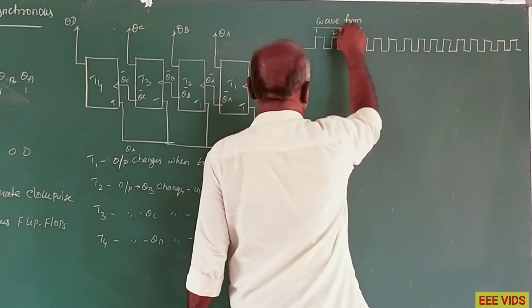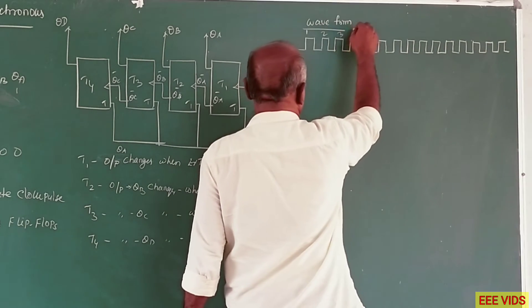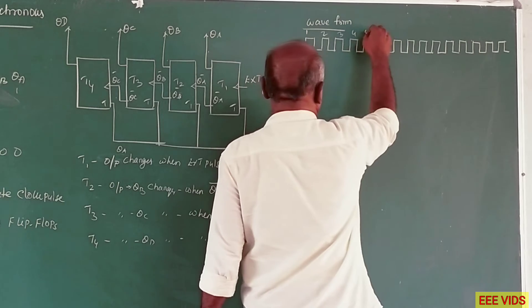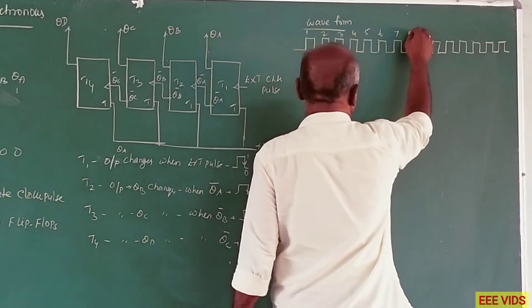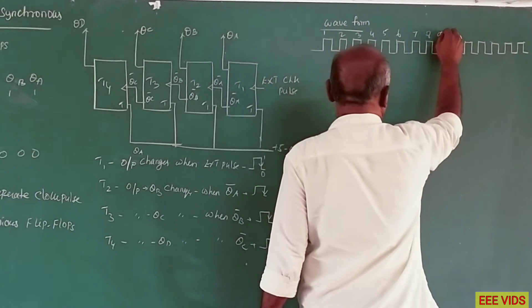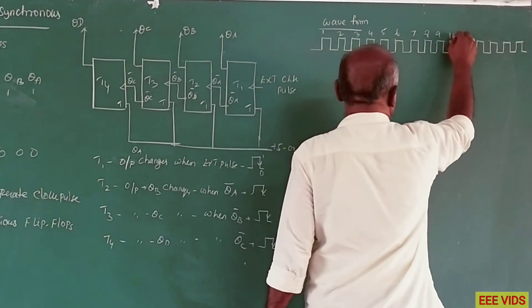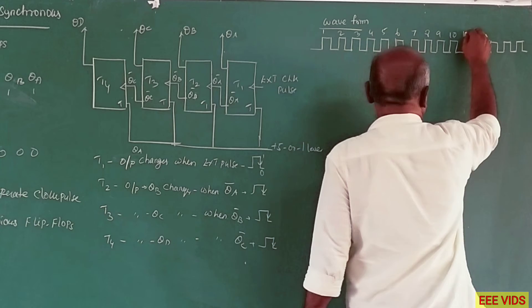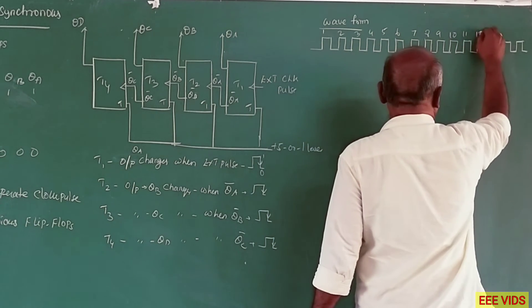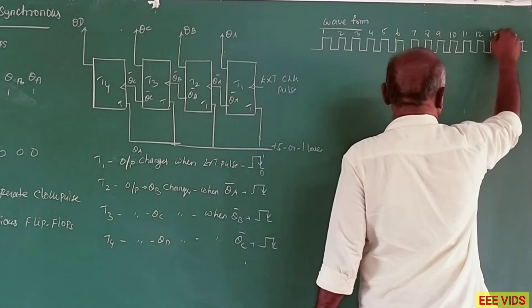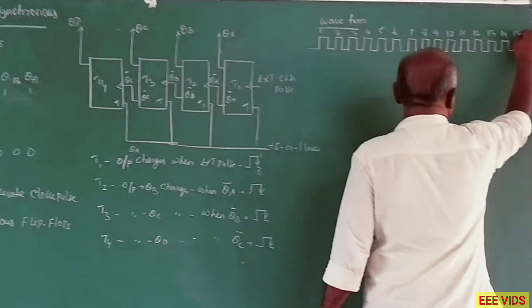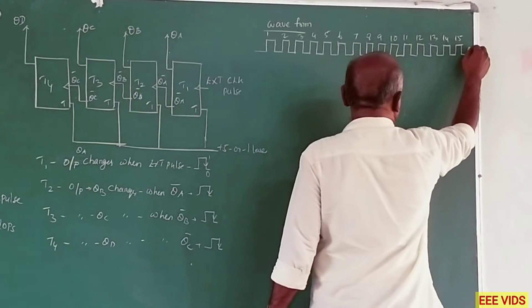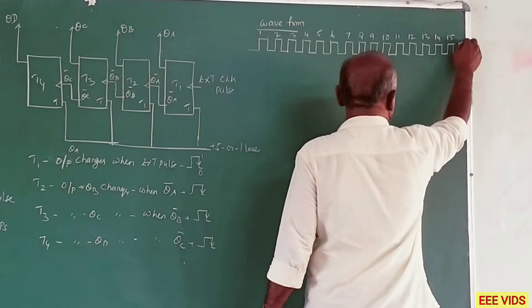The 16 external clock pulses are numbered: 1, 2, 3, 4, 5, 6, 7, 8, 9, 10, 11, 12, 13, 14, 15, and the last one — 16.